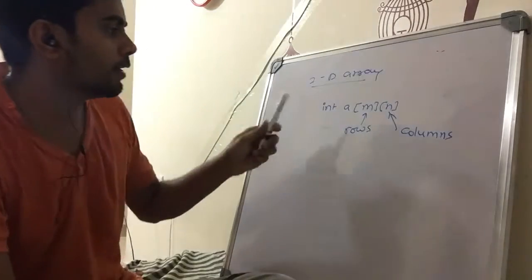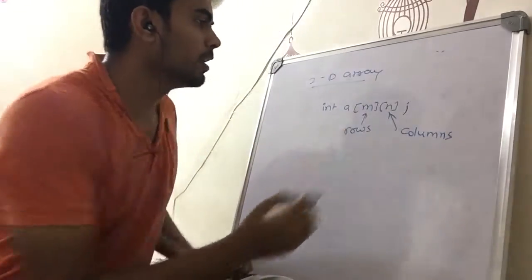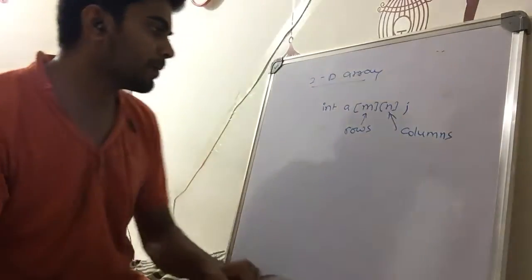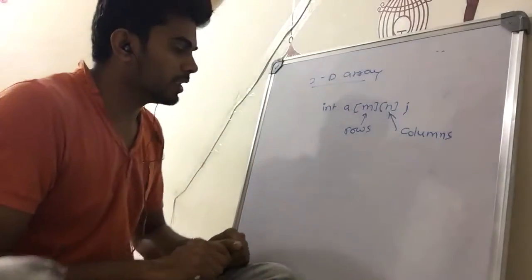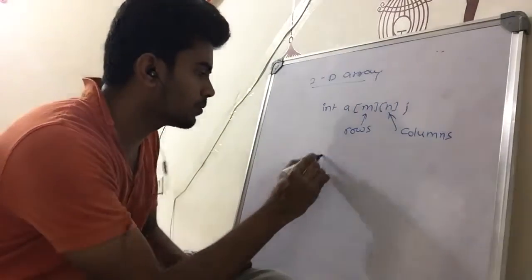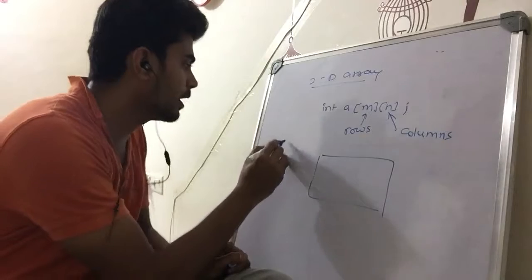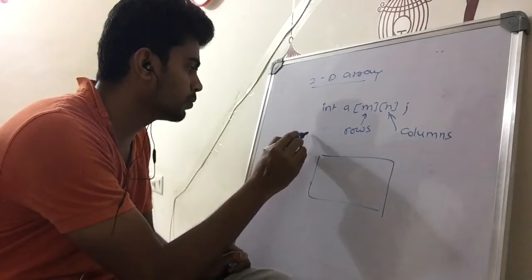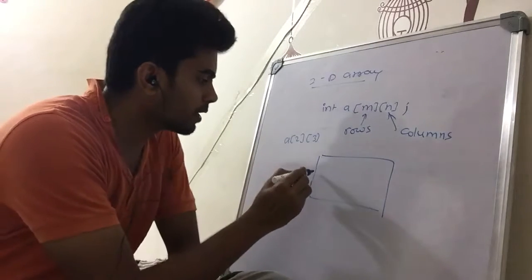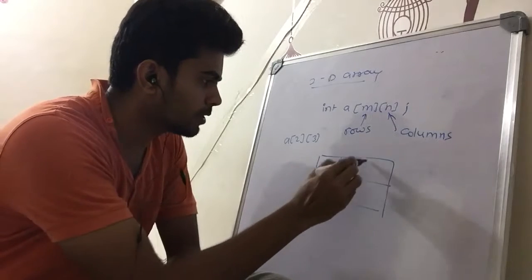This is how you declare a 2D array. Now let's talk about how you store a 2D array in memory — that's quite important. Say I have a matrix A of size 2×3, so there are 2 rows and 3 columns in it.